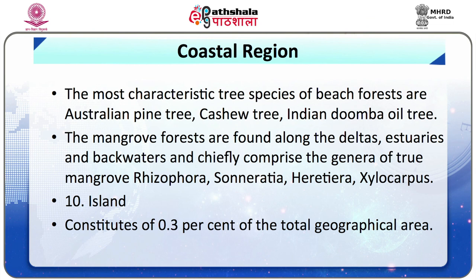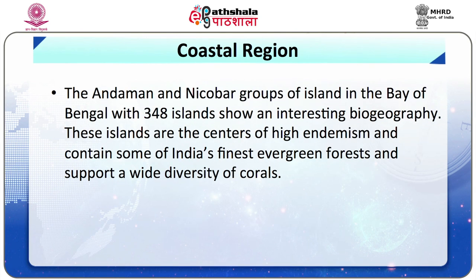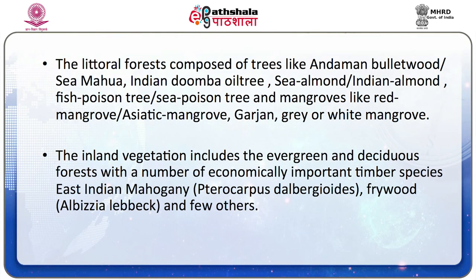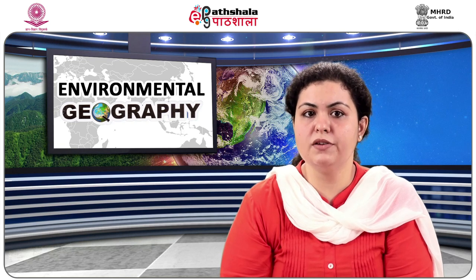Tenth, the Islands, constituting 0.3% of the total geographical area. The Andaman and Nicobar groups of islands in the Bay of Bengal, with 348 islands, show an interesting biogeography. These islands are centres of high endemism, containing some of India's finest evergreen forests and supporting wide diversity of corals. They support roughly 2,200 species of higher plants, with about 210 endemic species of which 75 are trees. The dense vegetation can be classified as littoral and inland types. Littoral forests include trees like Andaman bulletwood, Indian Duba oil tree, sea almond, and poison tree. The inland vegetation includes evergreen and deciduous forests with economically important timber species like East Indian mahogany and fry wood.